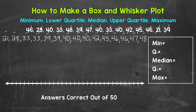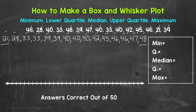Now that we have the data in order from least to greatest, we need to find the minimum, the first quartile, the median, the third quartile, and the maximum. Let's start with the minimum and maximum, which are just the smallest and largest numbers in value. The minimum is 21 and the maximum is 48.